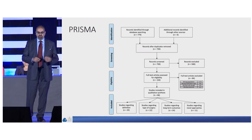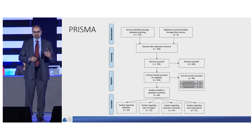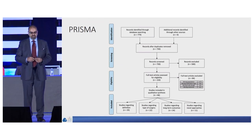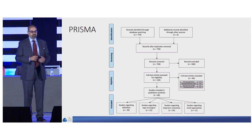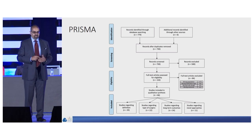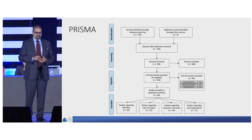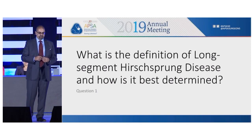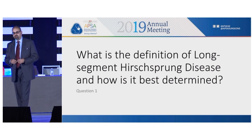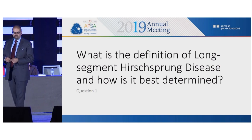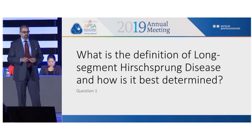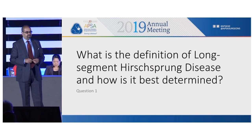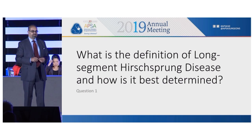We conducted a PRISMA review. We looked at the literature from 1990 forward, and we defined four questions that aligned with our learning objectives. The first is what is the definition of long-segment Hirschsprung disease, and how is it best determined?